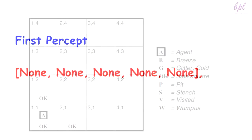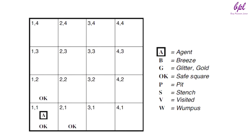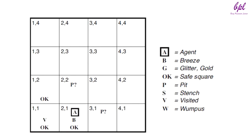The first percept is none, none, none, none, none — from which the agent can conclude that its neighboring squares 1,2 and 2,1 are free from dangers and are OK. An agent will move only into a square it knows to be OK. Suppose the agent decides to move forward to 2,1. The agent perceives a breeze (denoted B) in 2,1, so there must be a pit in a neighboring square. The pit cannot be in 1,1 by the rules of the game, so there must be a pit in 2,2 or 3,1 or both. The notation P? in the figure indicates a possible pit in those squares.